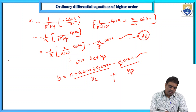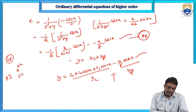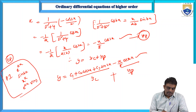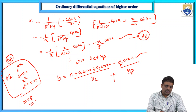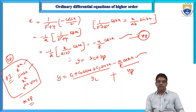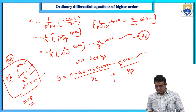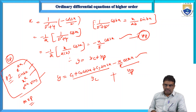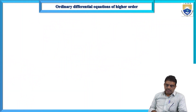In this problem, the particular integral models include e^(ax), sinbx or cosbx, x^k, e^(ax)·v(x), and the method of variation of parameters. Depending on the right-hand side function, we follow the appropriate procedure. Now I will do another problem. Here f(D) has auxiliary equation f(m) = 0, giving m² - 4 = 0, so m² = 4, m = ±2. Roots are real and distinct.